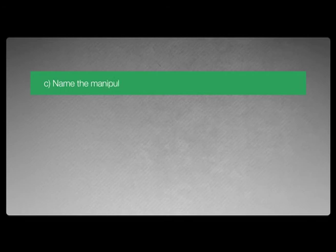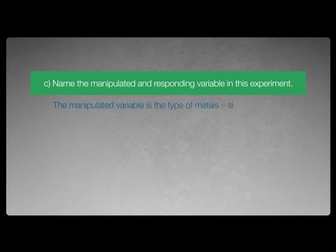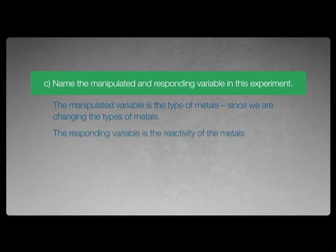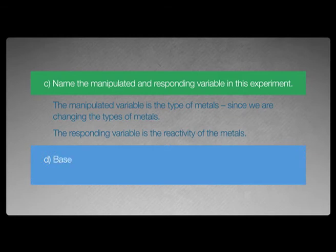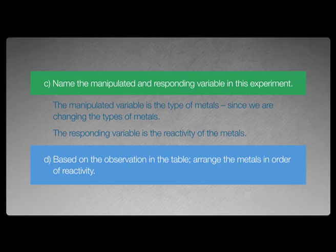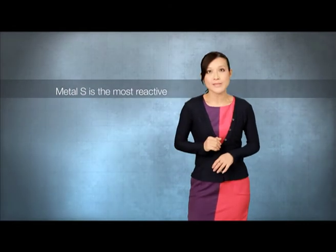Question C: Name the manipulated and responding variable in this experiment. The manipulated variable is the type of metals, since we are changing the types of metals. The responding variable is the reactivity of the metals. Question D: Based on the observation in the table, arrange the metals in the order of reactivity. The most reactive metal is the one that burns the brightest. So the most reactive metal is S, followed by Q, P, and R.